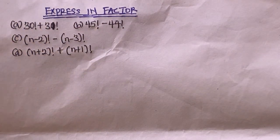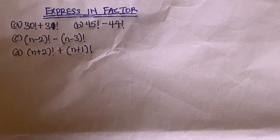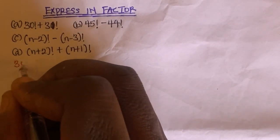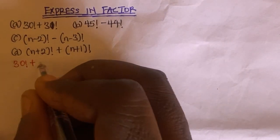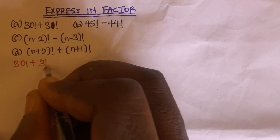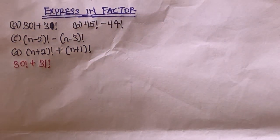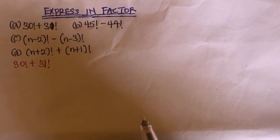So the first question we are given is 30 factorial plus 31 factorial, and we are asked to express it in factor form.